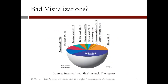Our next pie chart has its own share of problems. This is a plot of how many shark attacks have been attributed to each type of shark. Firstly, the pie chart is for some reason plotted on a hemisphere, a graphical effect that adds nothing but has the effect of vertically compressing the pie chart.